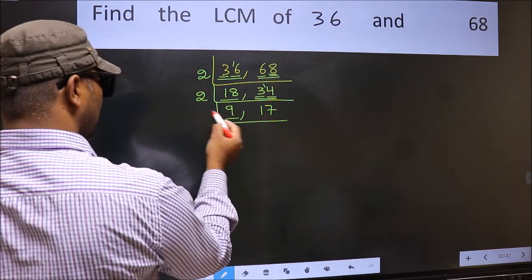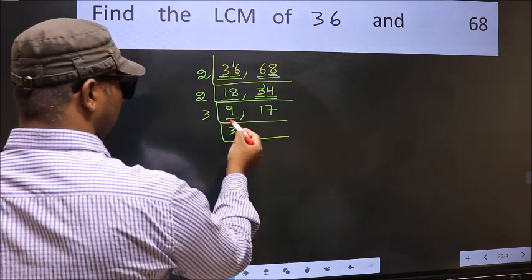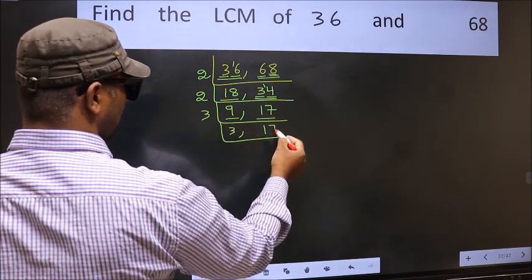Now here we have 9. 9 is 3, 3 is 9. The other number 17, not divisible by 3. So we write it down as it is.